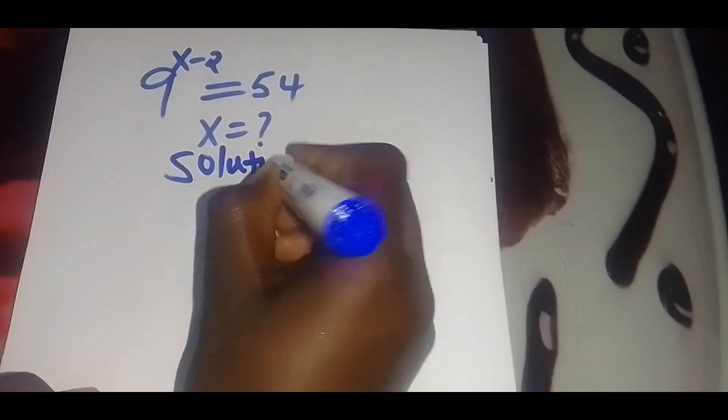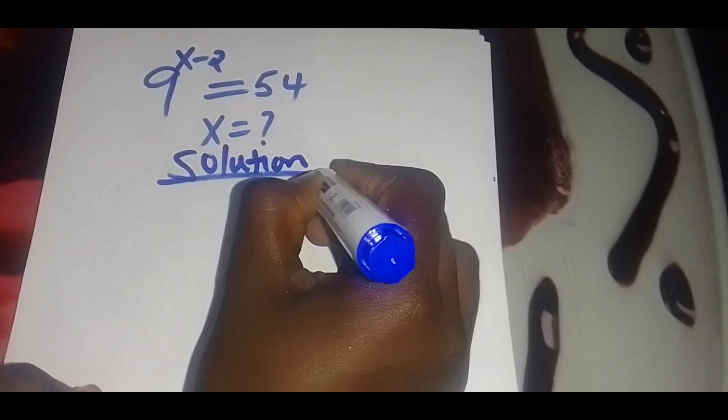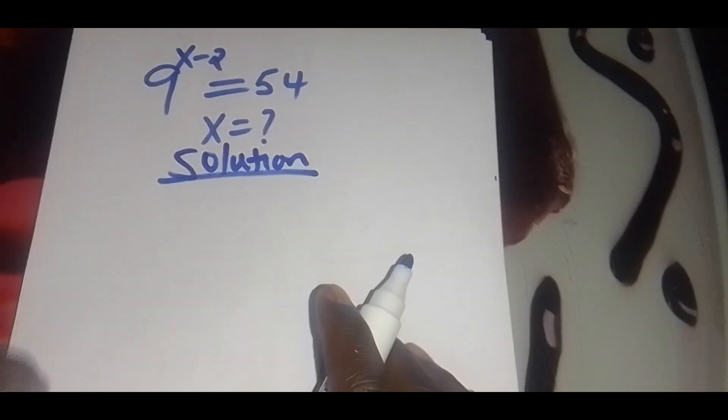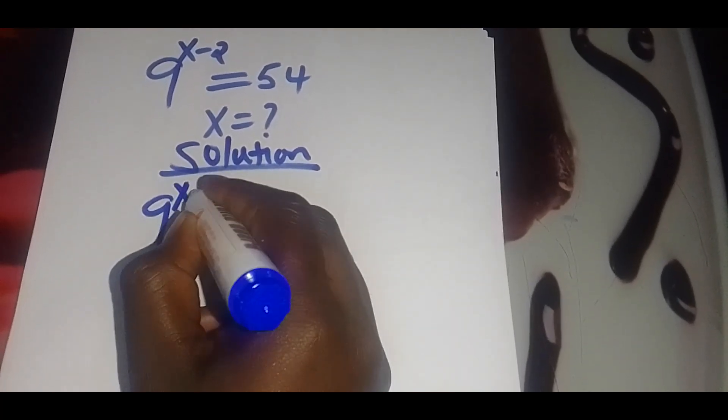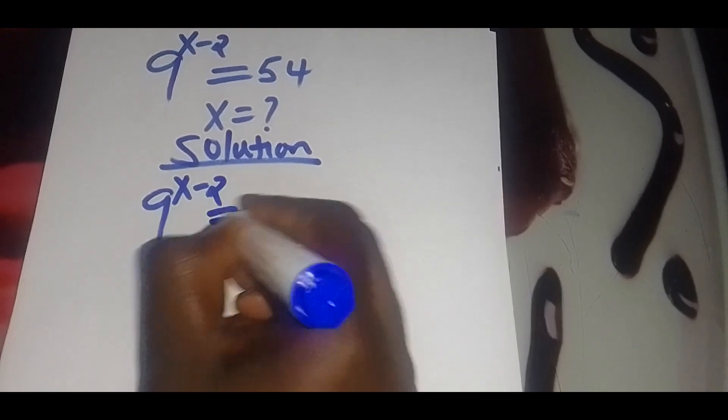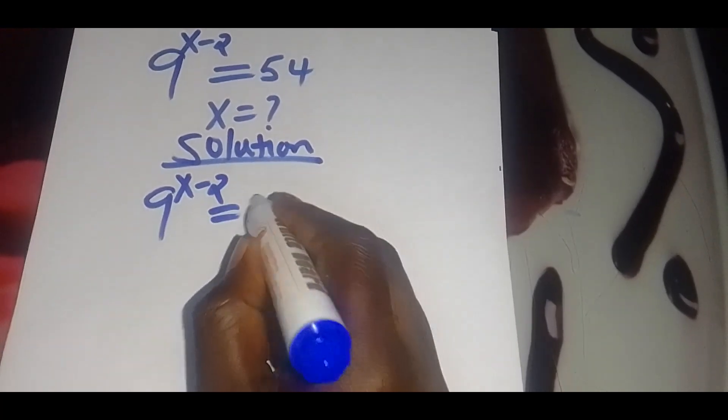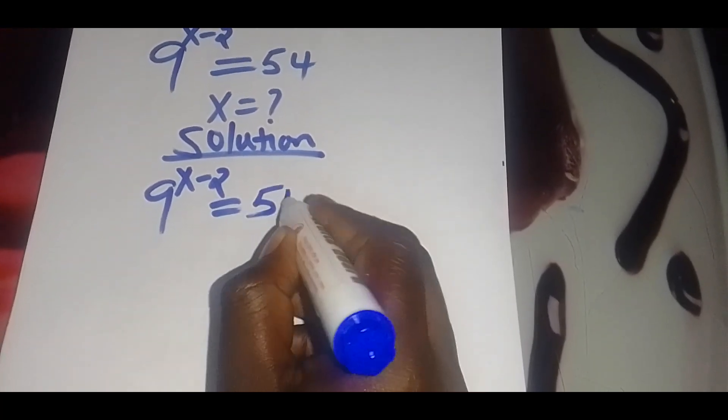Everyone, welcome to the video. We are going to find x given this exponential equation solution. We have that 9 raised to the power x minus 2 is equal to 54.